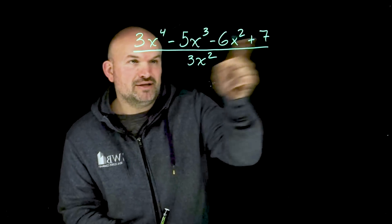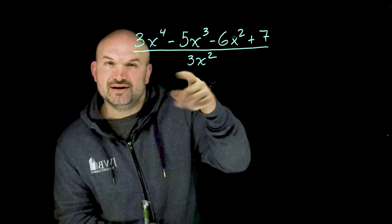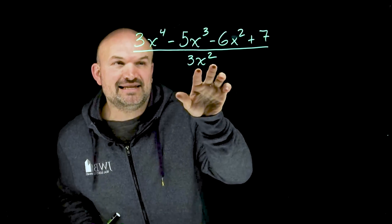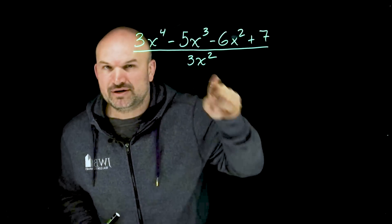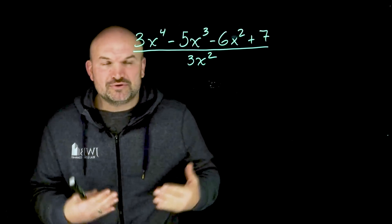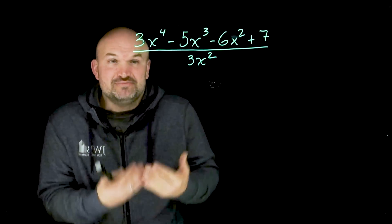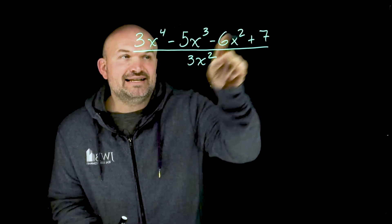Remember, this polynomial is all being divided by 3x squared. So what that means is I can take this monomial and divide it into each and every one of those terms. I actually don't need to go through the long division algorithm. It's much more quick to divide it into every single term.